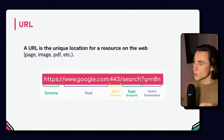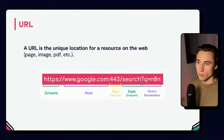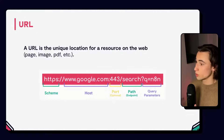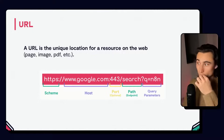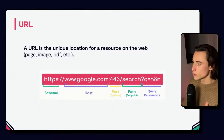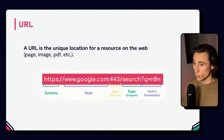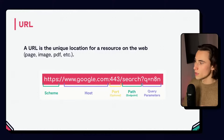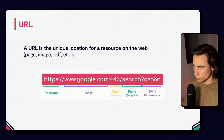The URL is the unique location for a resource on the web. This can be a page, an image, a PDF, or some data. Here we have an example of a URL. You can see a scheme, a host, a port, a path, and some query parameters. The scheme, the host, and the path are going to be mandatory, and the port and query parameters are going to be optional. Something important to note: query parameters are always preceded by a question mark.